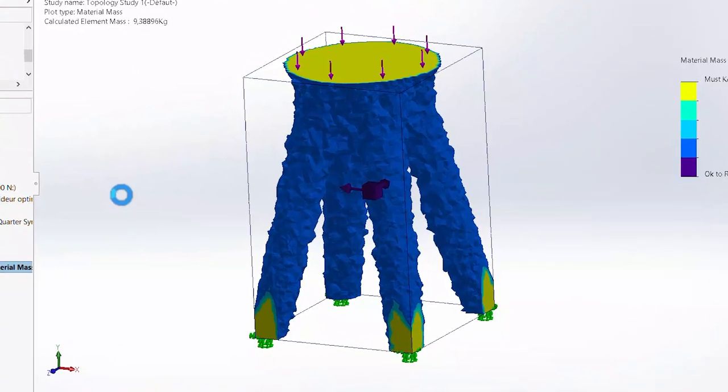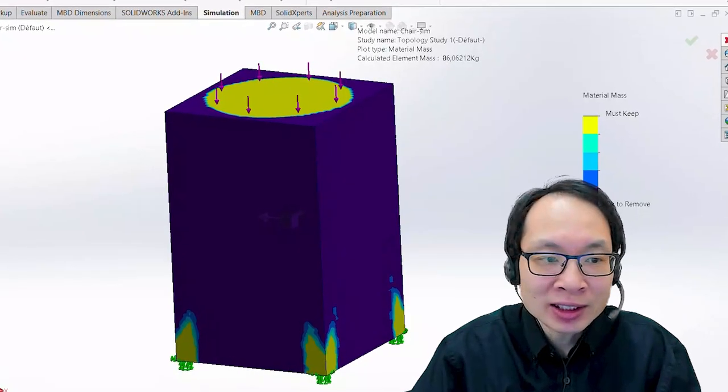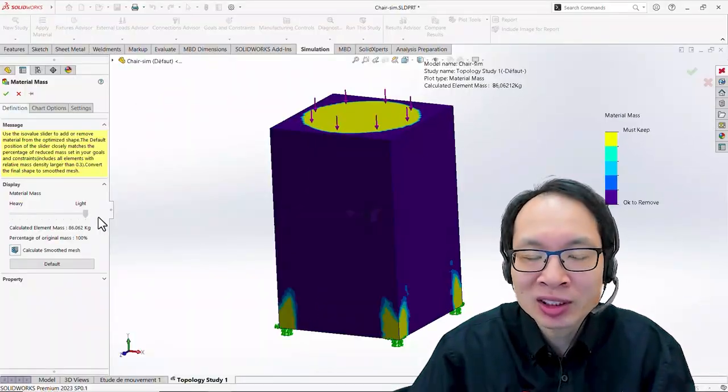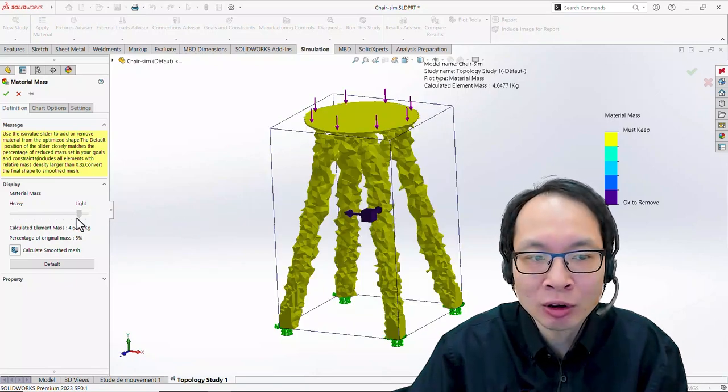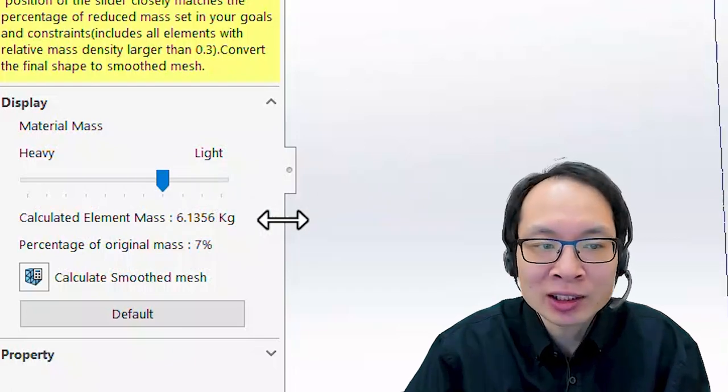Of course, we get to see the final shape of the optimal design. So let's see what happened. We started with this heavy mass of 86 kilograms, and a possible solution could be this, to have this as a final shape, or maybe this, for a final mass of 6.1 kilograms.